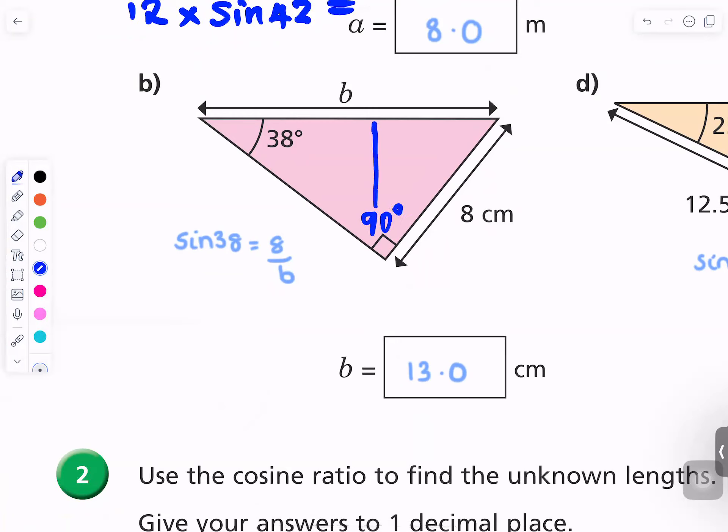And then the one opposite the 90 degrees is always the longer one, the edge, the hypotenuse. And then you look for the angle that they've given you. The angle is 38, so that's where you put the person's eyes. I'll make the person have a green eye there and then the person's eyelashes there. The person is looking that way, so the 8 is the opposite.